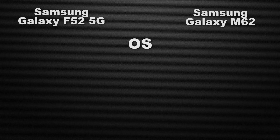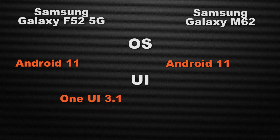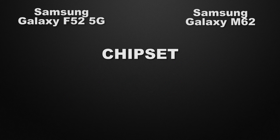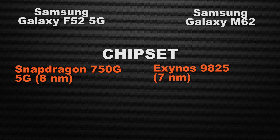Moving to the performance of the devices, let's start with the operating system. Both the F52 and M62 have Android 11 support, so it's a tie. About the user interface, both come with One UI, so it's a tie. Talking about the processor, the F52 has the Snapdragon 750G 5G based on an 8nm process, whereas the M62 is powered by the Exynos 9825 based on an 8nm process.